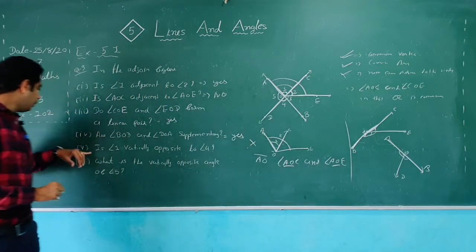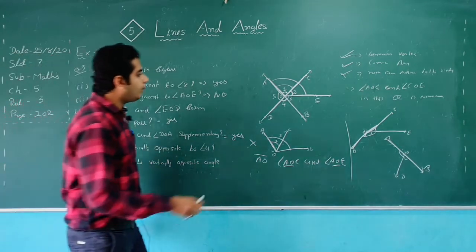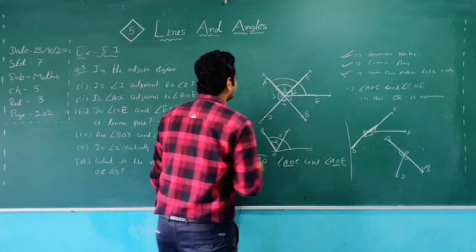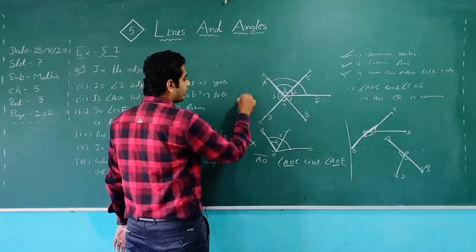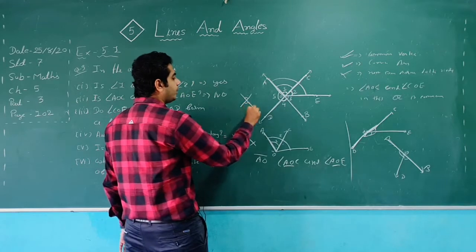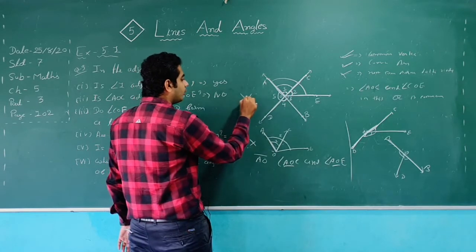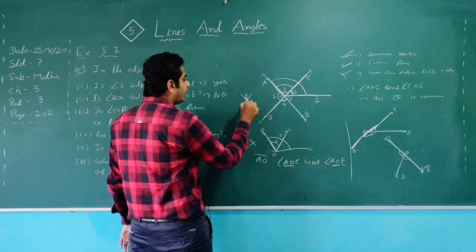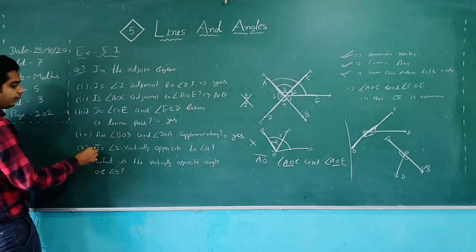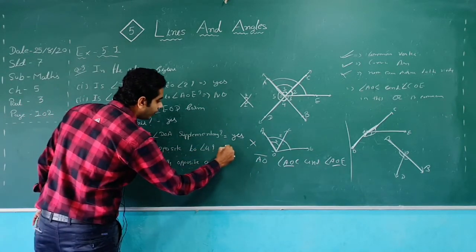Sub-question 5: Is angle 1 vertically opposite to angle 4? Yes. Two lines intersect at a point. The angles formed on opposite sides of the intersecting point are equal — vertically opposite angles. So yes, angle 1 is vertically opposite to angle 4.